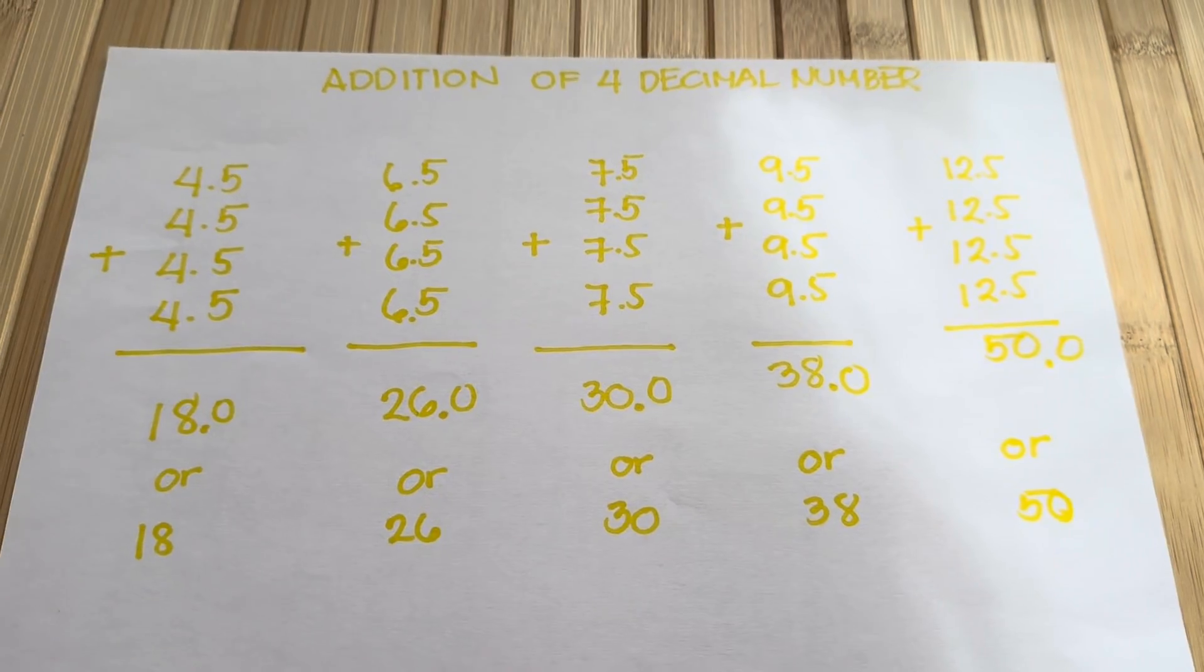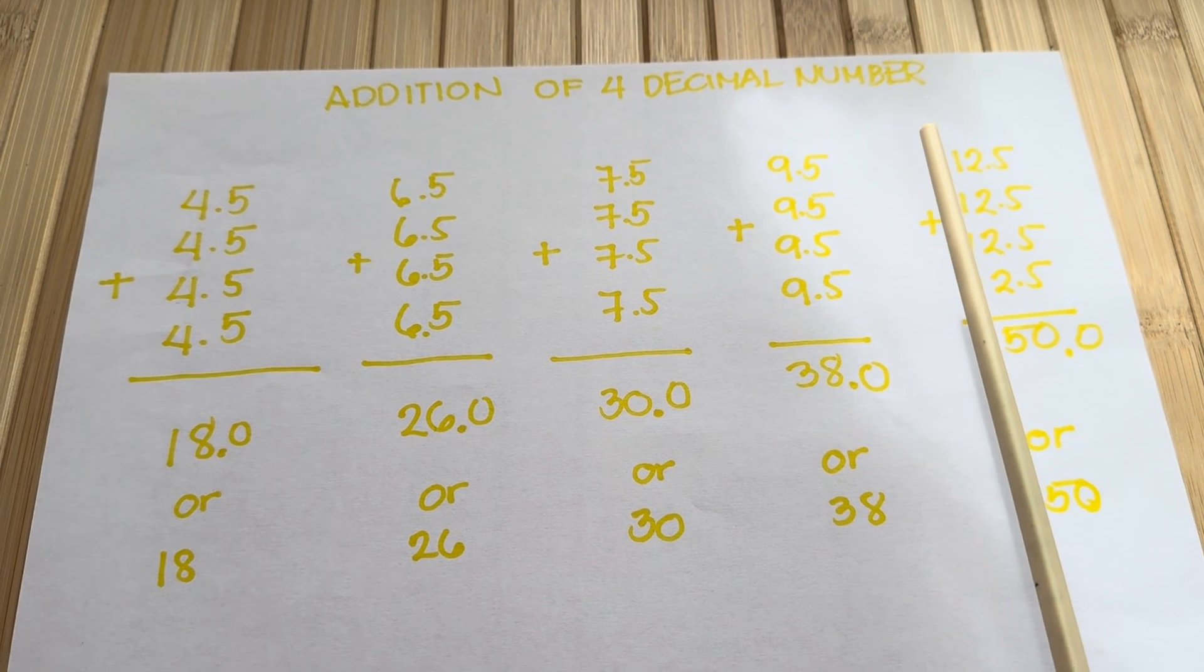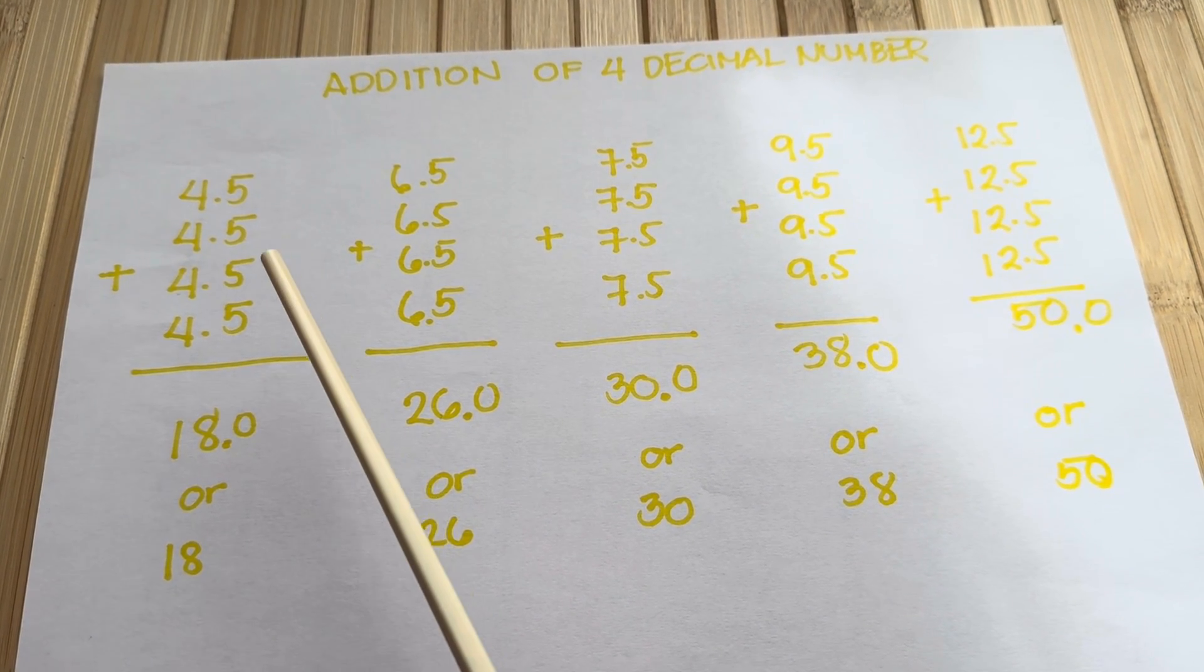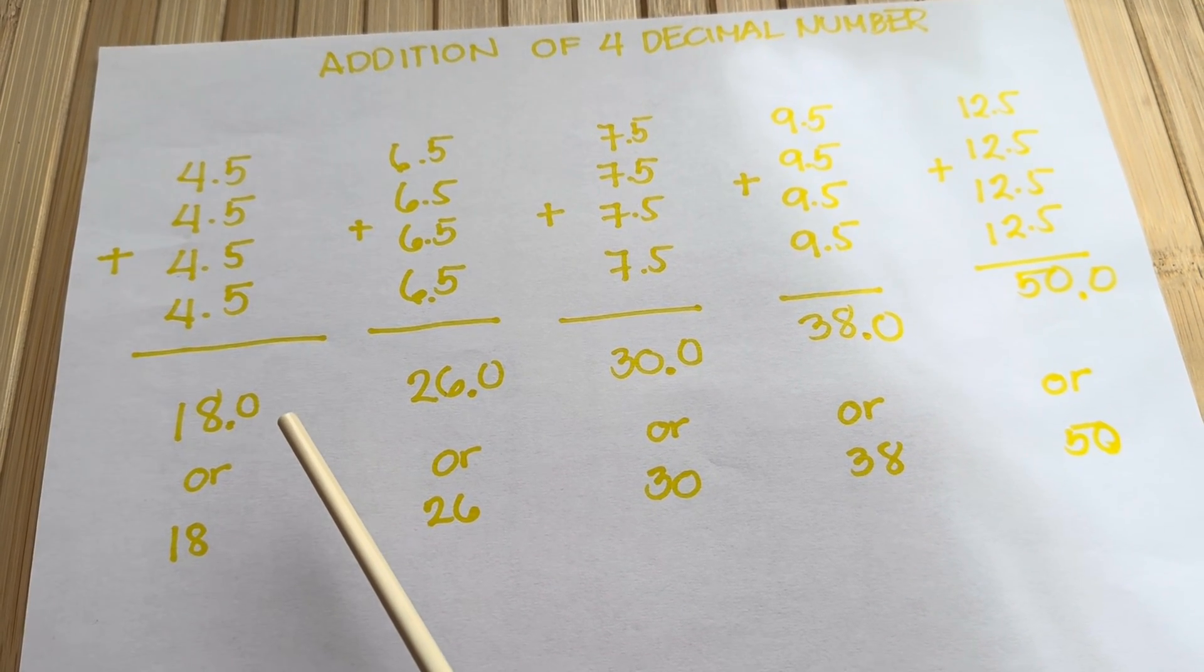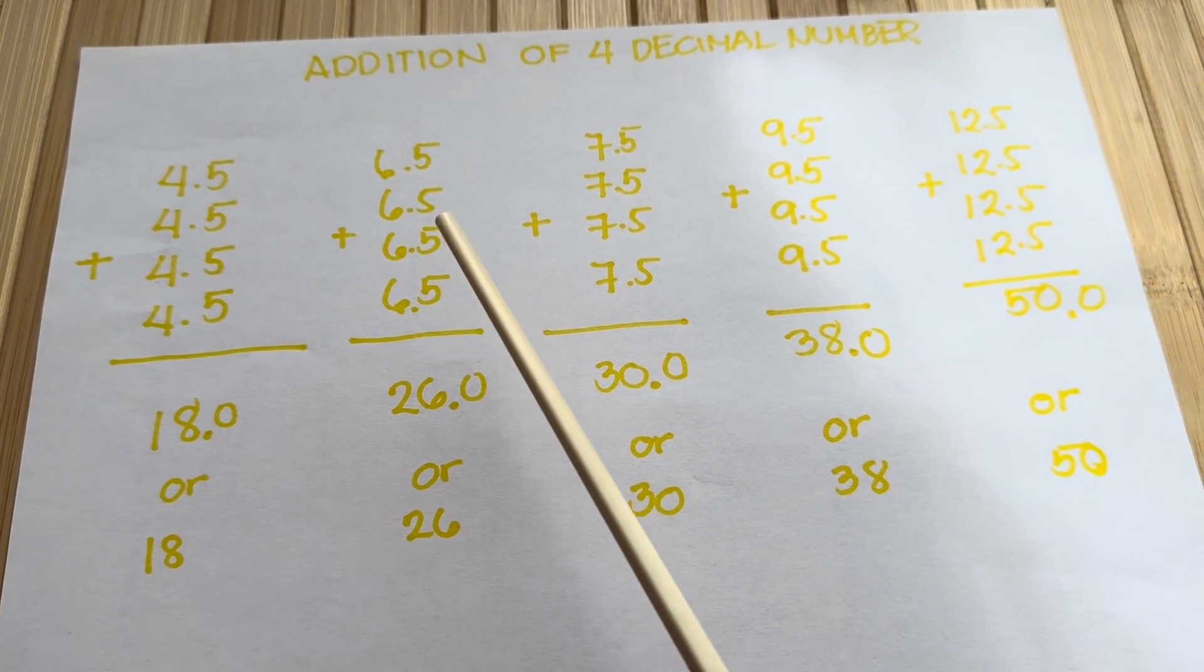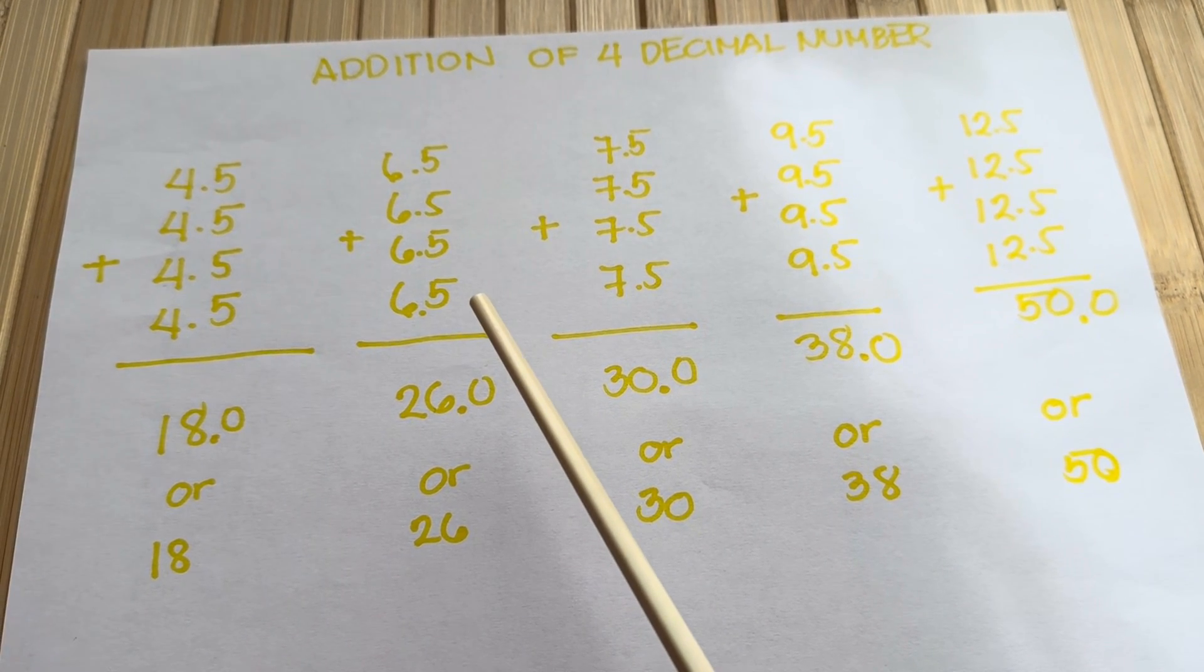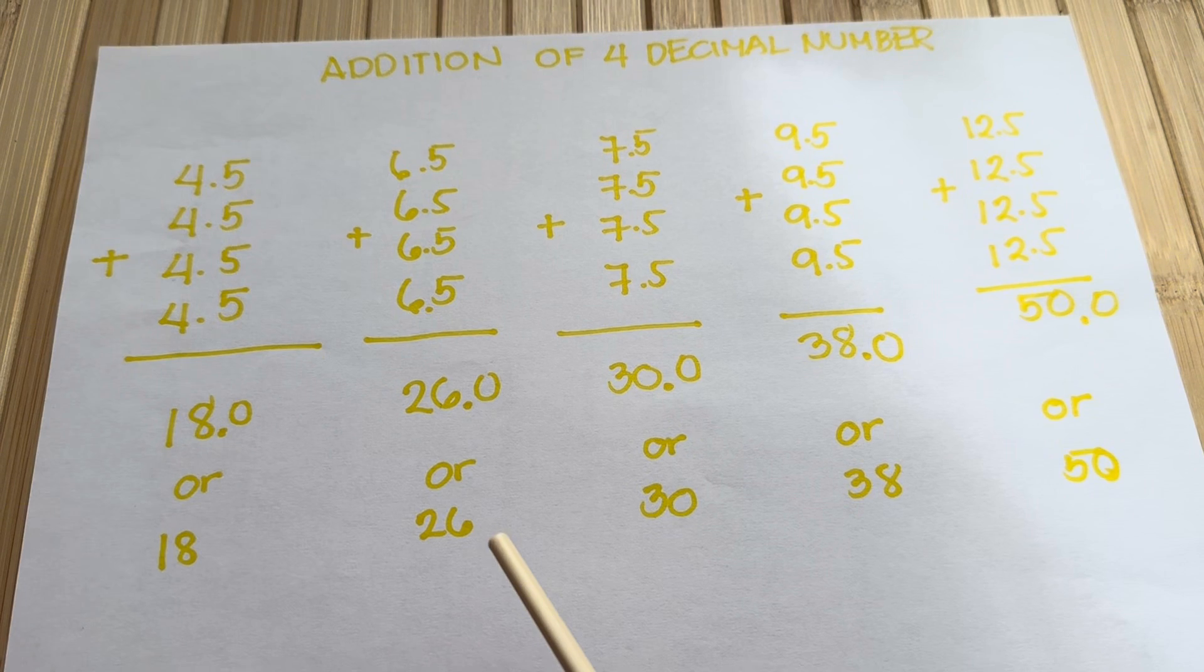Now join me and let's do addition of four decimal numbers. 4.5 plus 4.5 plus 4.5 plus 4.5 is equals to 18.0 or 18. Next, 6.5 plus 6.5 plus 6.5 plus 6.5 is equals to 26.0 or 26.